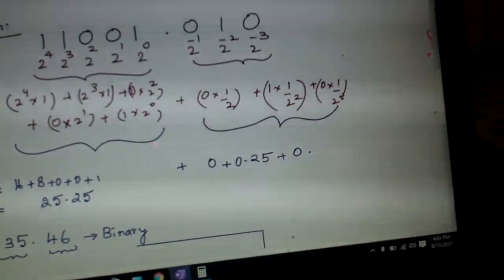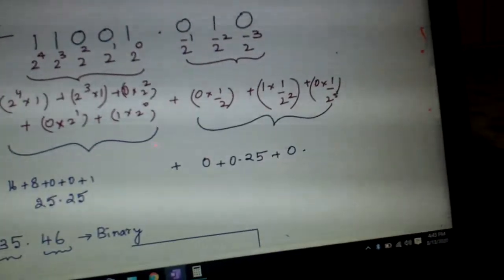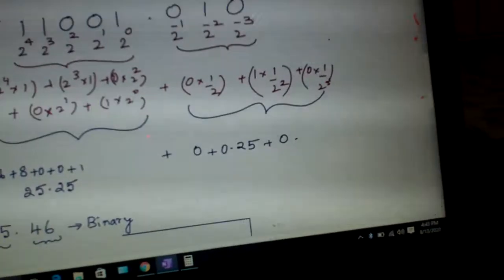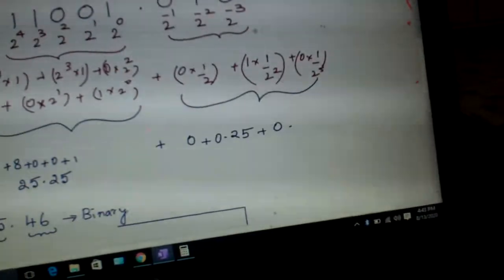So now write back this number. 11001.010 is the binary equivalent of the number 25.28. So write the number together.